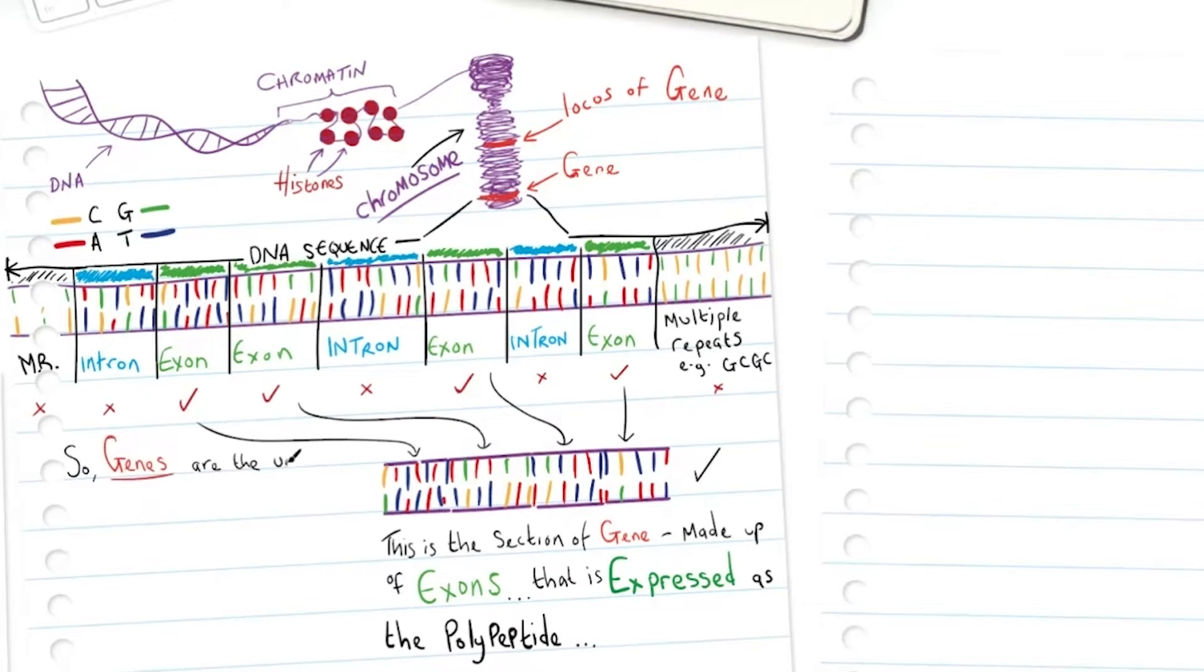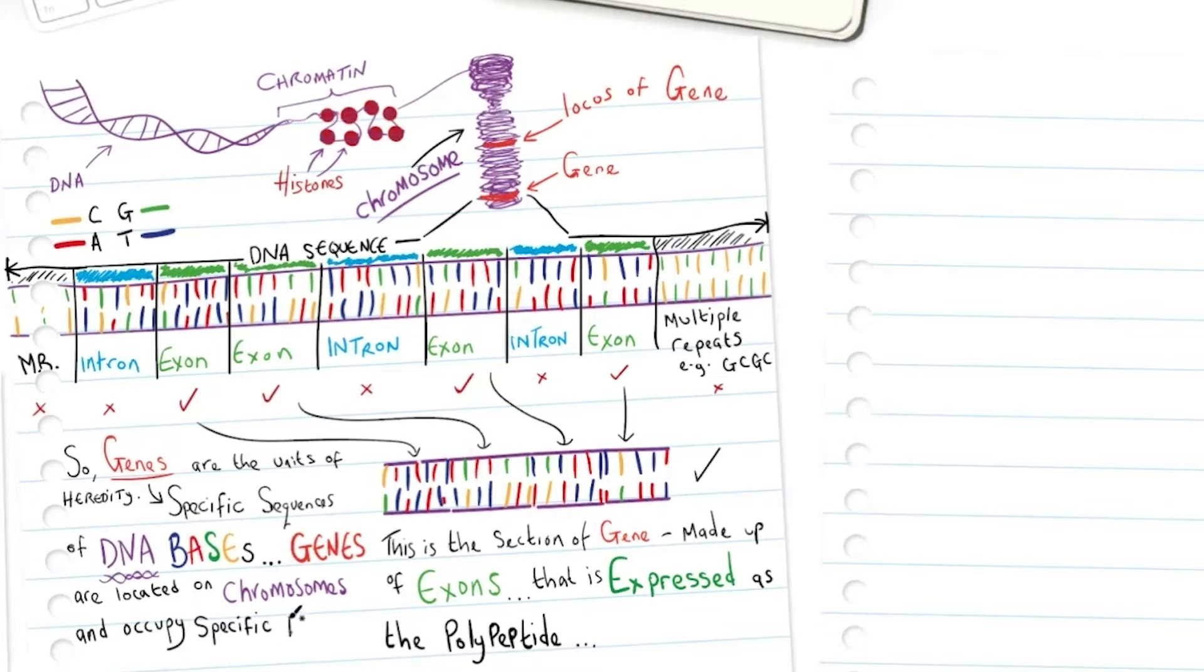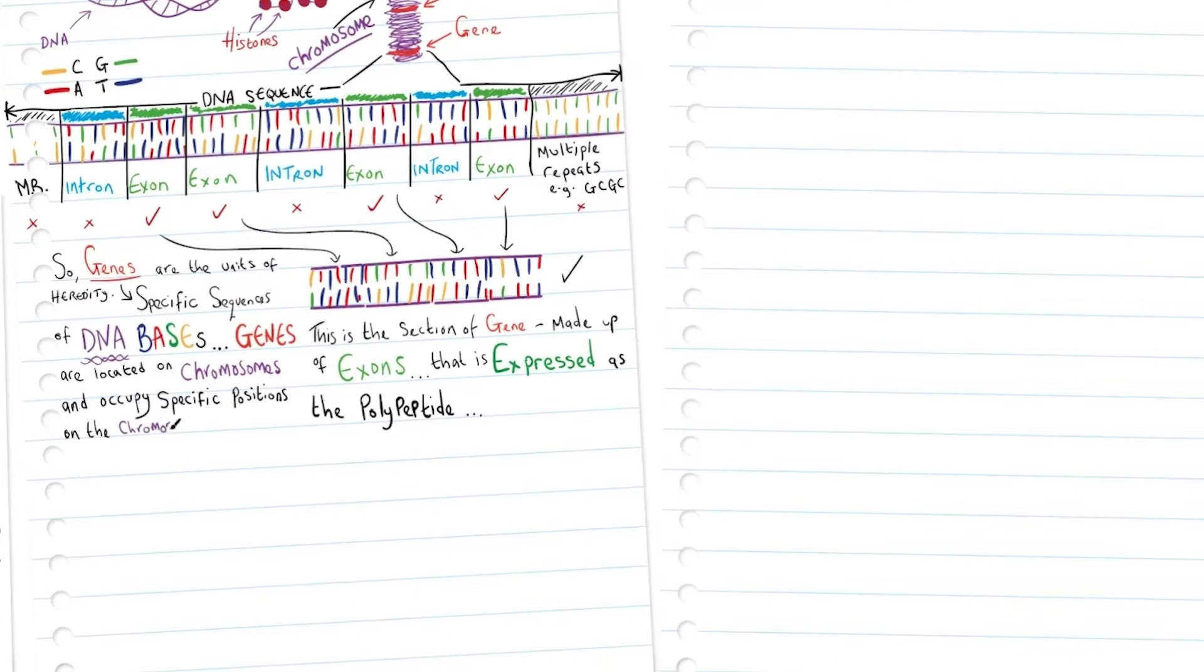Genes are the units of heredity and are specific sequences of DNA bases. Genes are located on chromosomes and occupy specific positions known as the locus or loci.